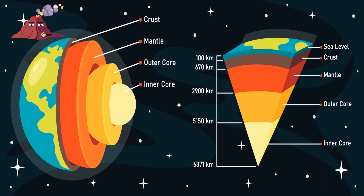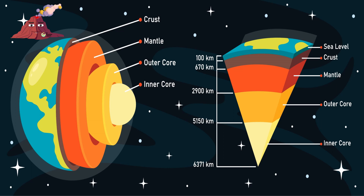The mantle is the layer that's under the crust. It's much thicker than the crust and is made up of hot, dense rock that can flow like a thick liquid over very long periods of time. The movement of the mantle is what causes the movement of the tectonic plates.